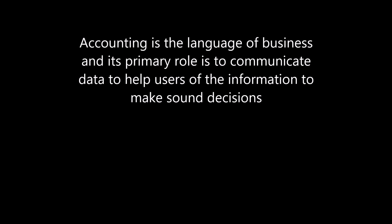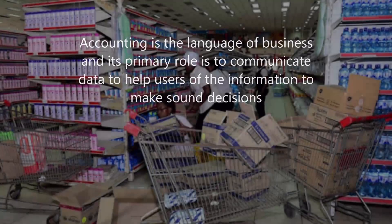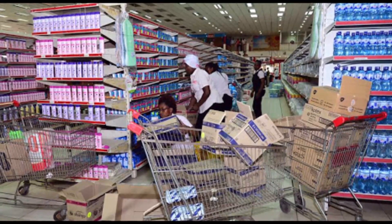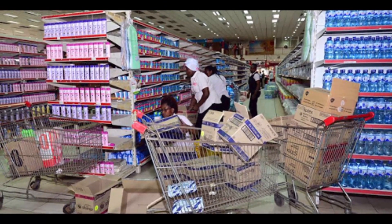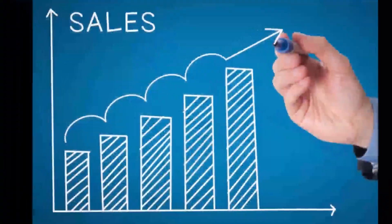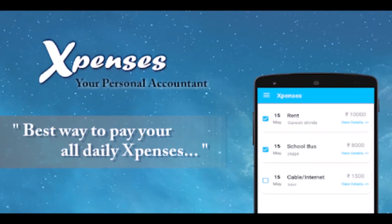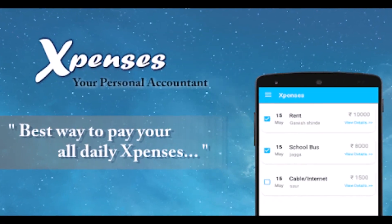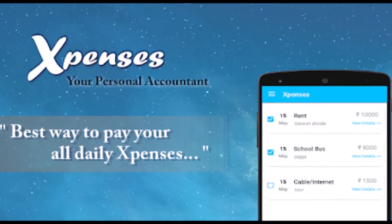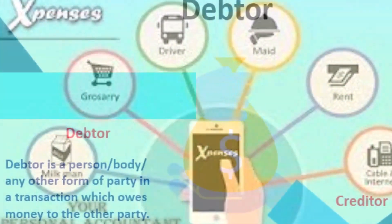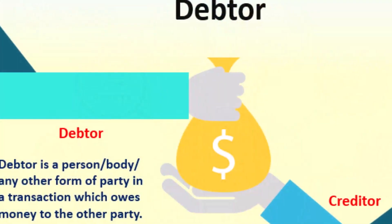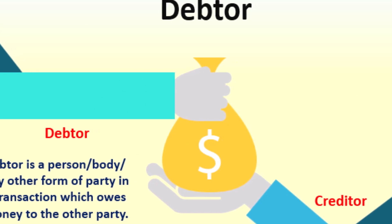However, there is a process involved when accounting language is being used to generate this information. Let's say you are running a grocery store. You will be making sales on a daily basis, so in your books you will record sales. There will also be expenses you incur, so in your books you will record expenses like electricity, rent, and so on. You will also have people who buy stuff from you on credit, so you are supposed to record these in your books as debtors.